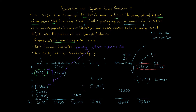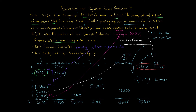For investing activities, transaction F — the purchase of land — is the only item, giving a cash outflow of negative $20,000. For financing activities, transaction E — the issuance of common stock — gives a cash inflow of $26,000.